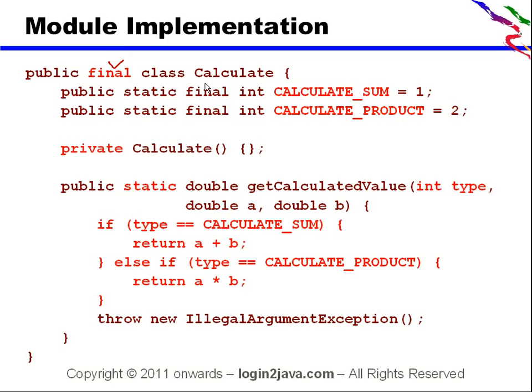So that's why we made it final. We have taken two constants, calculate sum and calculate product. They are basically type of calculation that should be performed looking at the context. Sum is one and product is two. These are the constants.